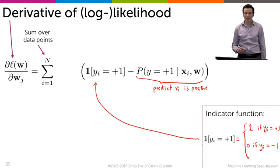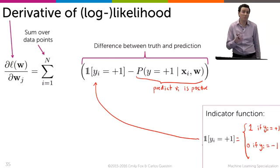In other words, this is the difference between the truth—is this a positive example—and the likelihood that my model assigns to being a positive example.